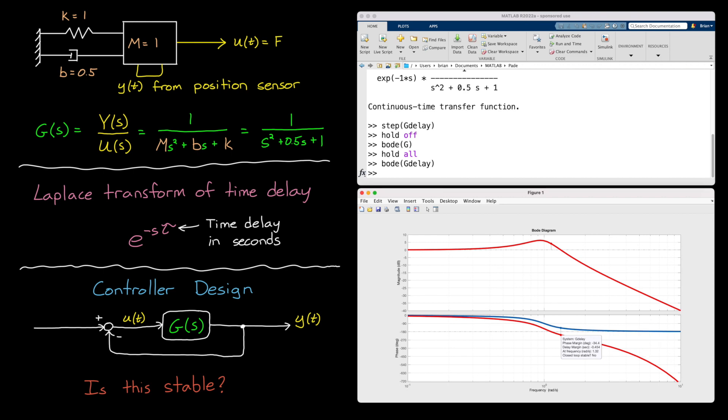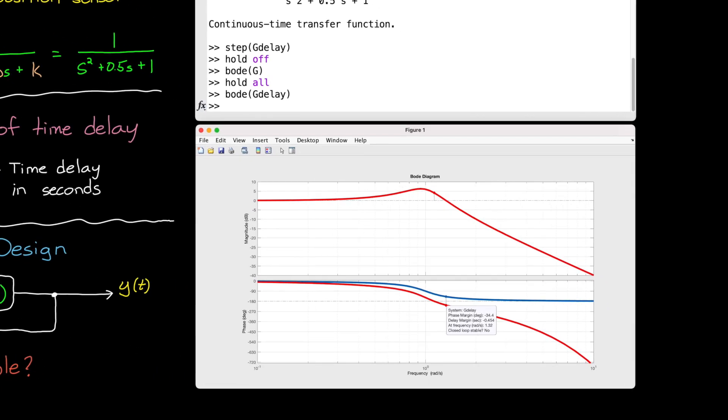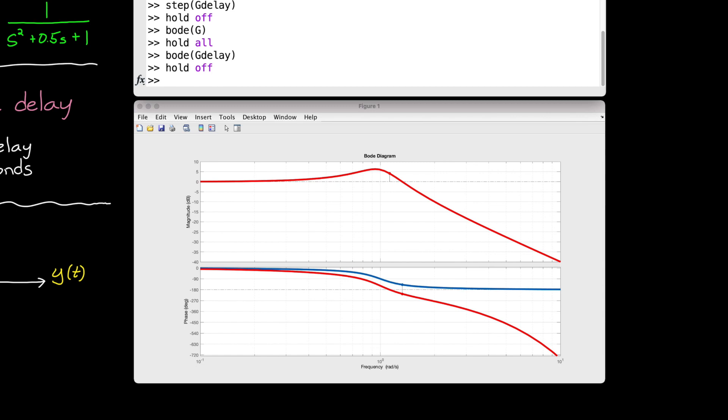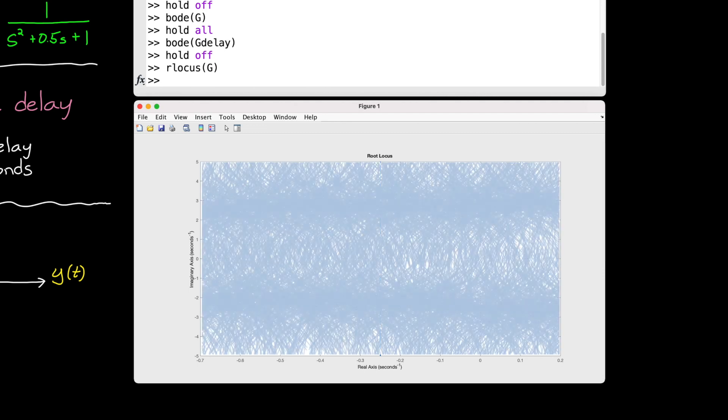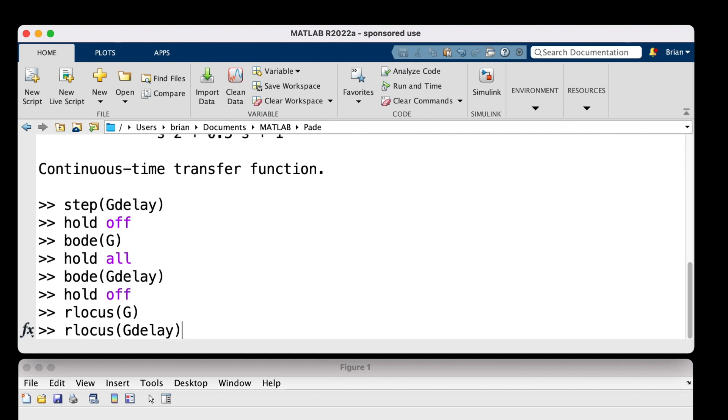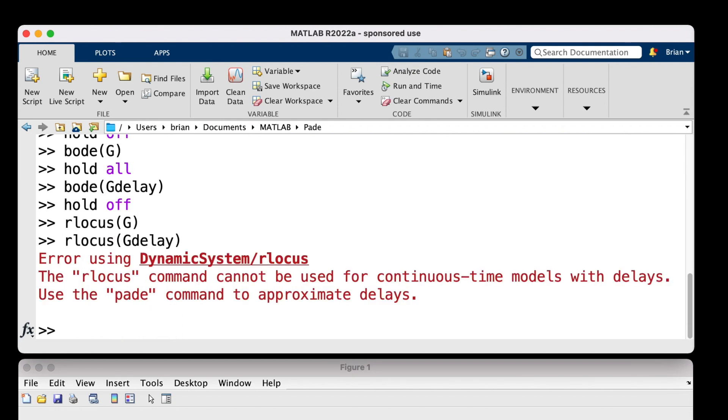However, there are some tools that don't work with time delays. For example, root locus doesn't work. If we plot a root locus for the model without delay, we can see that it is a plot of how the closed loop poles move from the open loop poles to the open loop zeros as the loop gain increases. The problem is that a continuous time, time delay is essentially an infinite number of poles. So it's going to be difficult to display all of those lines on a graph. In fact, if I try to plot a root locus in MATLAB for the model with delay, it throws an error saying that it cannot be used for continuous time models with delays and to use the Padé approximation instead.